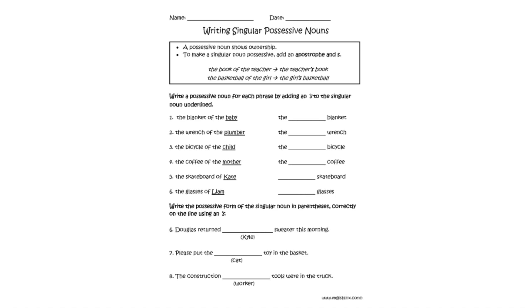Now let's go through this worksheet together. We are going to pick the possessive noun for each phrase by adding an apostrophe S to the singular noun underlined. The blanket of the baby — the answer is the baby's blanket. The next one says the wrench of the plumber — we just add apostrophe S, and our answer is the plumber's wrench.